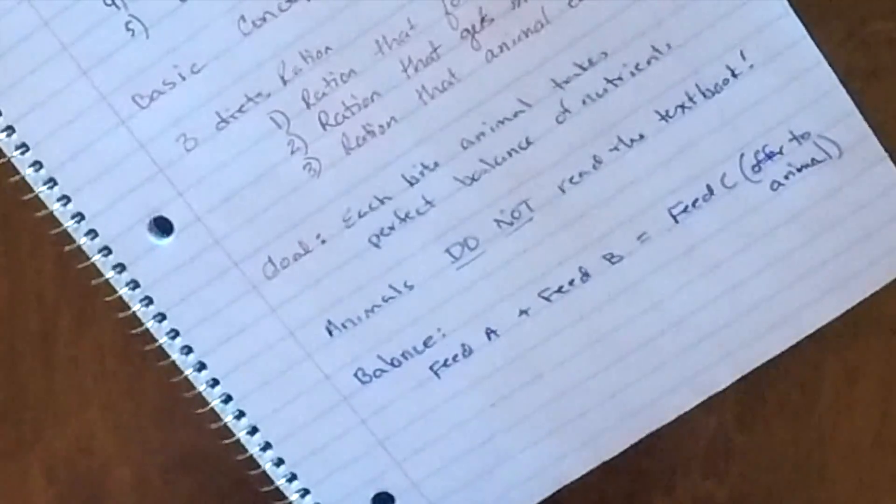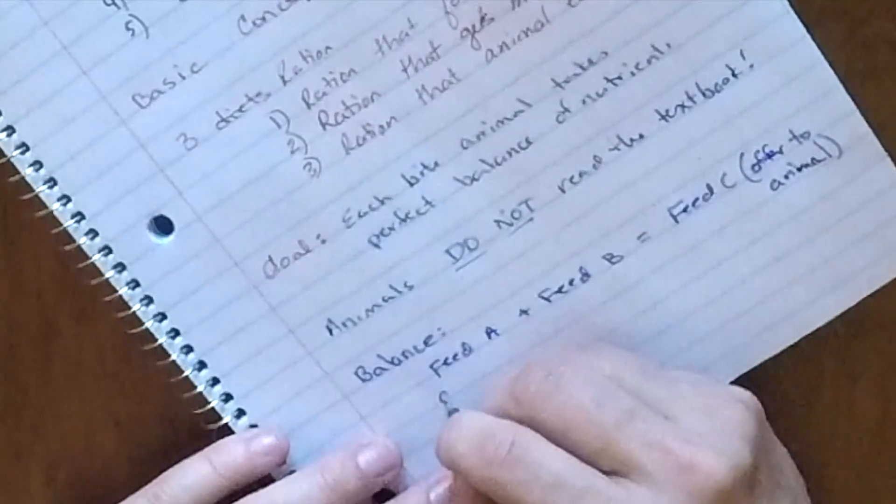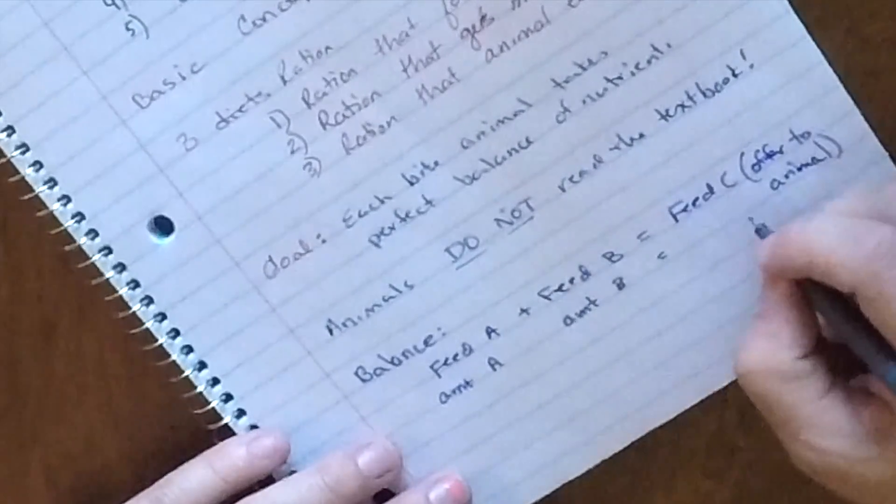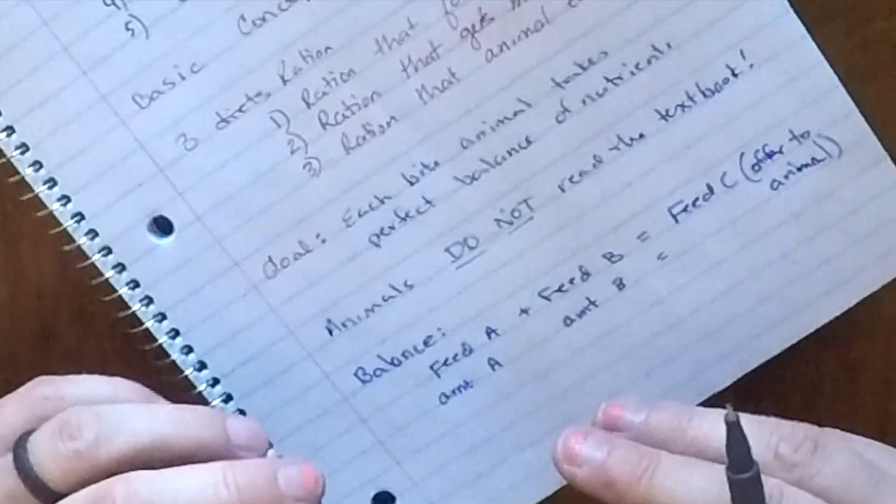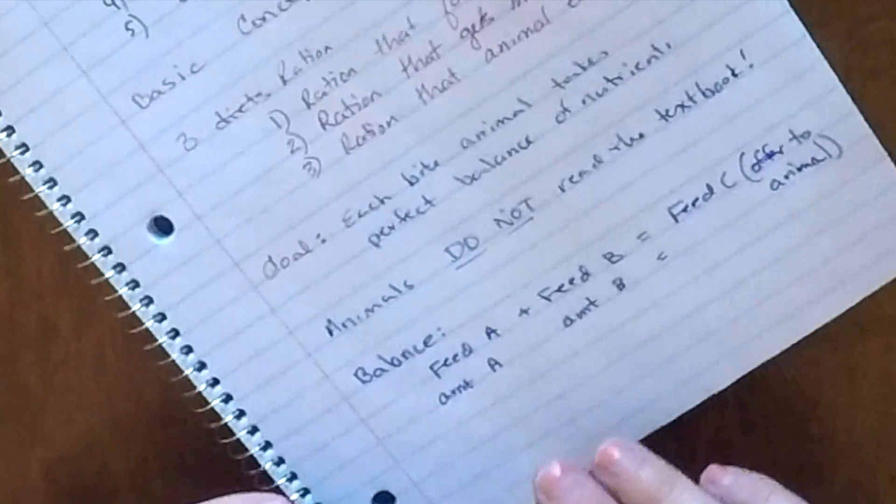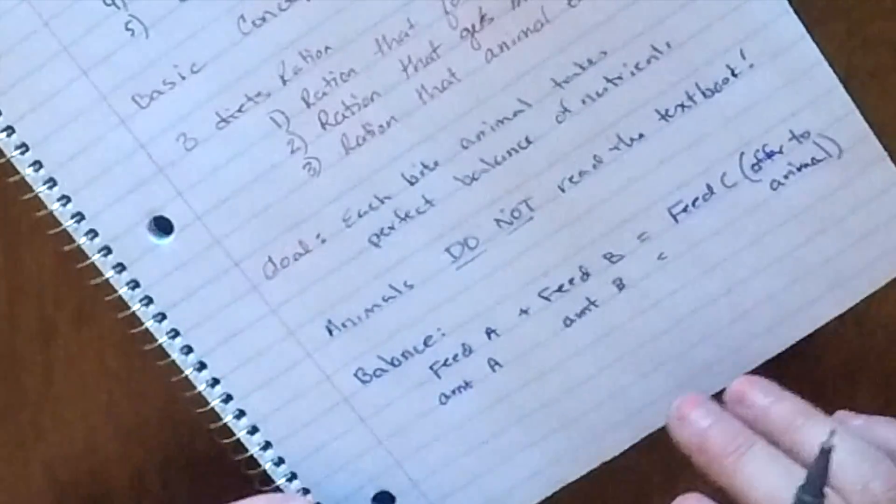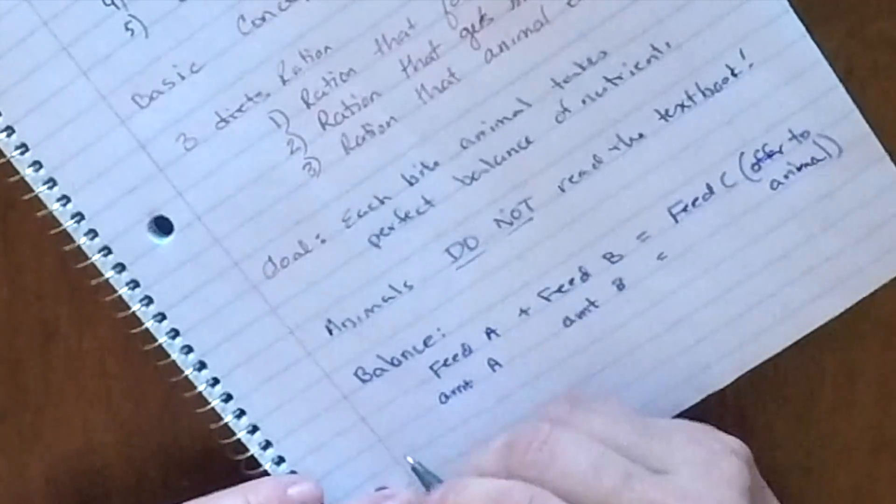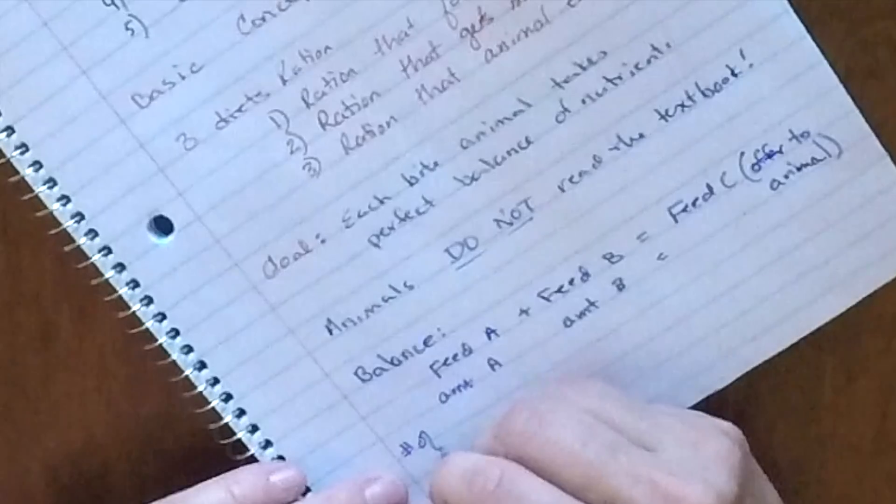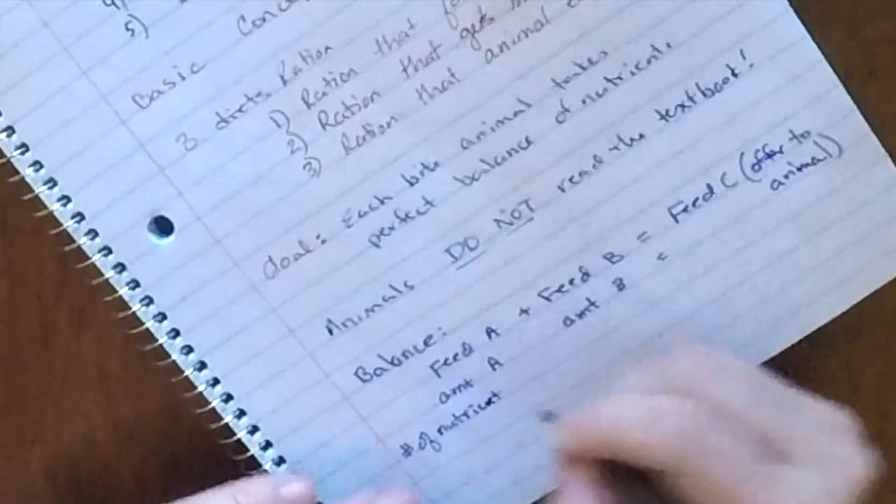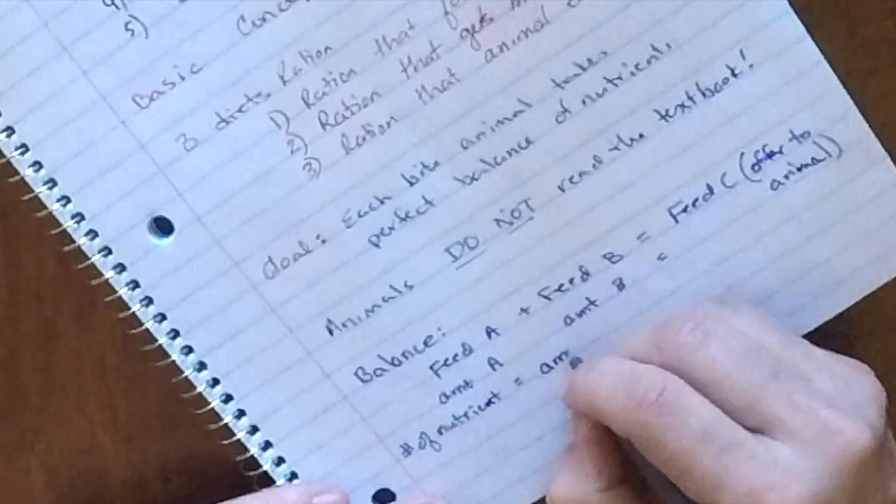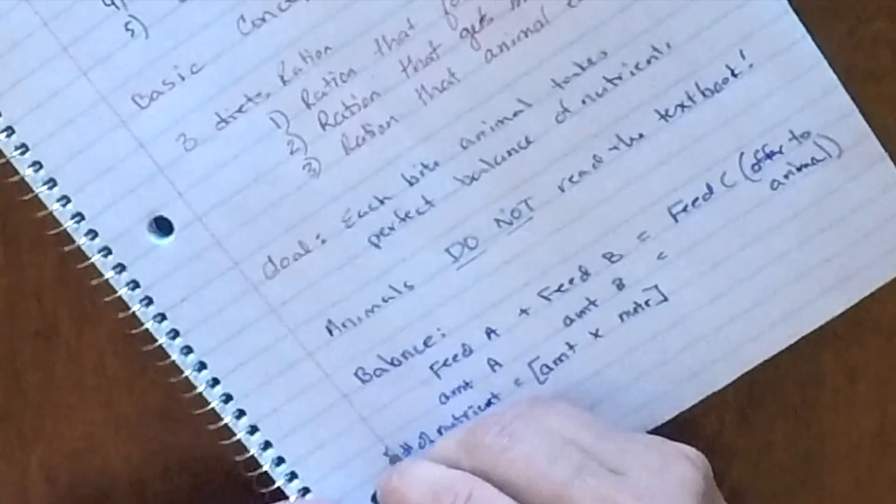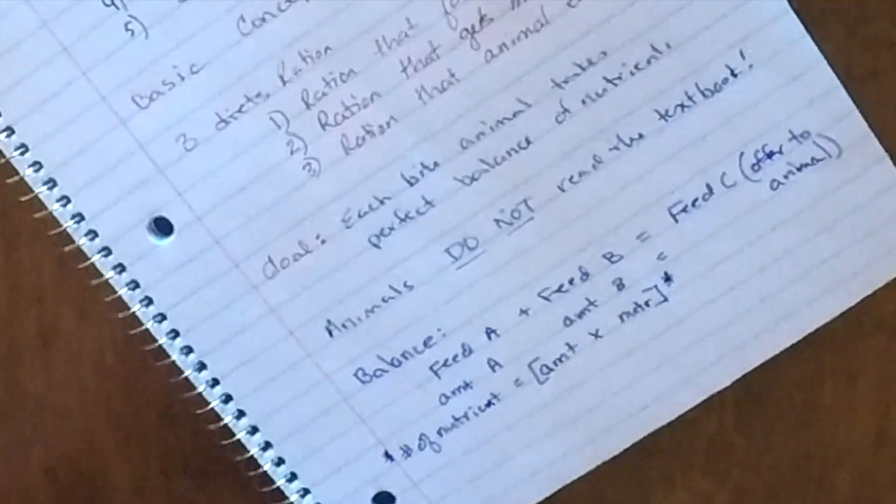And so what we need to do is we need to figure out some amount of feed A, some amount of feed B, that's going to equal feed C. And the challenge with that is, or not the challenge, but the basic principle is previously we have worked with the concept of how to figure out how many pounds of nutrient is in a feed. And that equals the amount times the nutrient concentration. If we were to have formulas to know, this is going to be one of them.